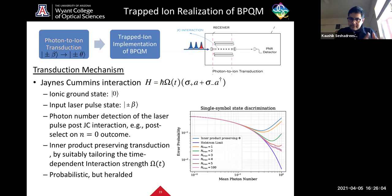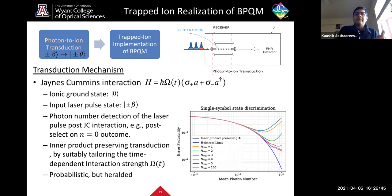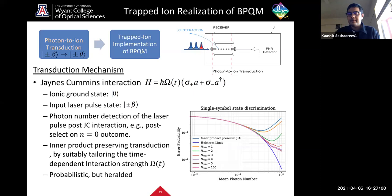One can further optimize the error probability of discriminating ionic states after transduction. However, the total probability of successful transduction followed by successful discrimination cannot exceed the minimum error probability of discriminating the optical pulses before transduction. We verify this law is preserved: the Helstrom limit for plus beta / minus beta states is the blue curve, and the inner-product-preserving interaction result matches accordingly. One can do better by post-selecting with a larger number of clicks and optimizing the total average error probability.